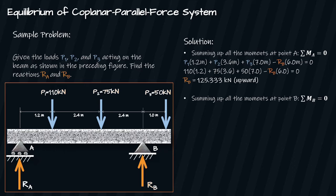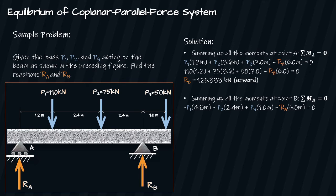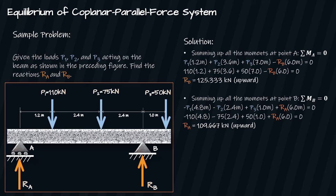Then we sum up all the moments at point B: summation of MB equals zero, assuming clockwise direction of moments is positive. That is: negative P1 times 4.8 minus P2 times 2.4 plus P3 times 1.0 plus RA times 6.0 equals zero. Substituting the values of P1, P2, and P3, we solve for RA, which equals 109.667 kilonewtons, acting upward.